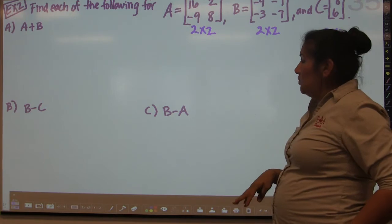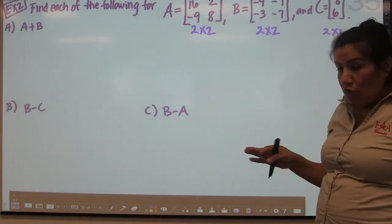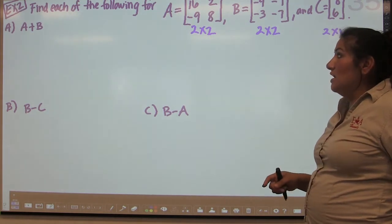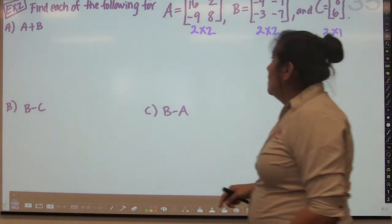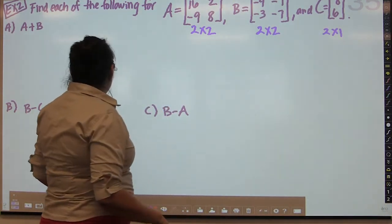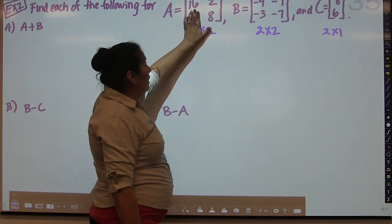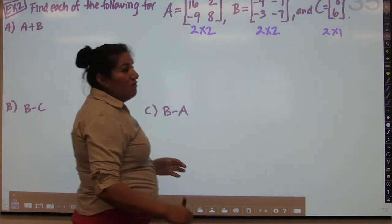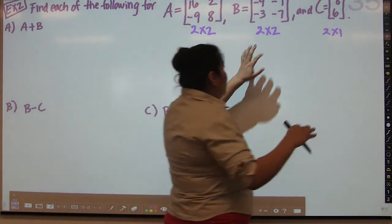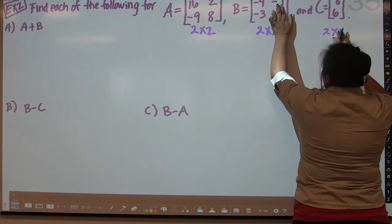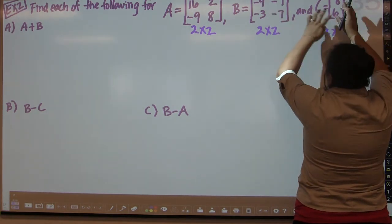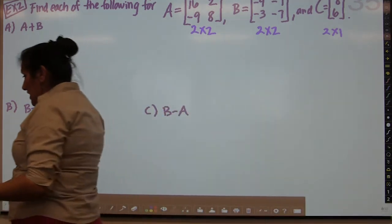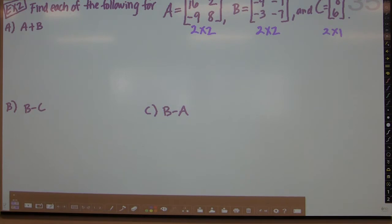We're going to add A and B together. You can only add two matrices if they have the same dimensions, because you add corresponding elements. I add the first row, first column of A with the first row, first column of B, and so on. If I tried to add B and C, which have different dimensions, there would be no corresponding element for the first row, second column. That's why you can't do it. When adding or subtracting matrices, you must have the same dimensions — if not, it's impossible.